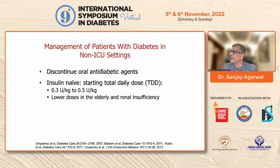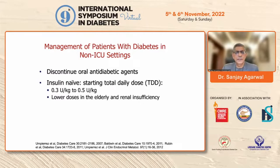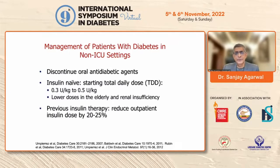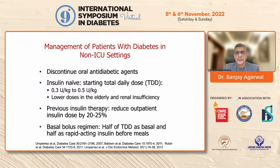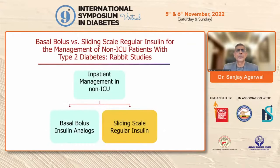In a non-critical care setting, discontinue oral agents. If the patient is insulin-naïve, give 0.3–0.5 units/kg/day depending on weight and metabolic status; for obese or very sick patients go higher, for elderly or those at risk of hypoglycemia use 0.1–0.3 units/kg/day. If the patient was already on insulin, reduce the outpatient insulin dose by 20–25%, then split it: half as basal and half equally divided as rapid-acting insulin before meals.